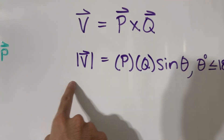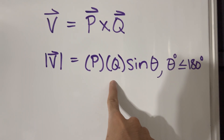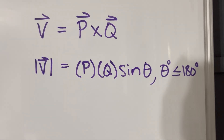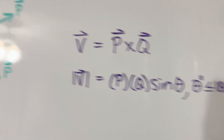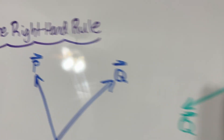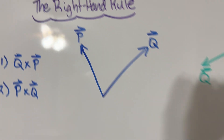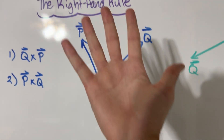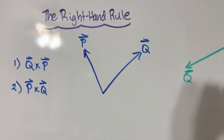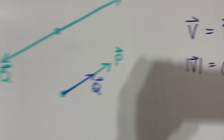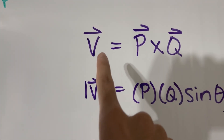The magnitude is simply P times Q times the sine of theta. But this video is about the right-hand rule — how does our right hand tell us the direction of this V vector?